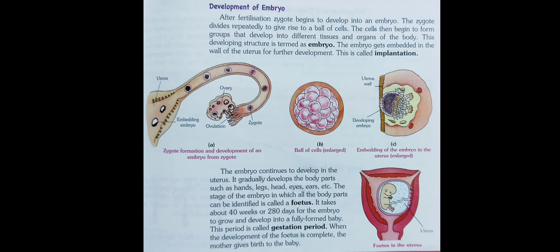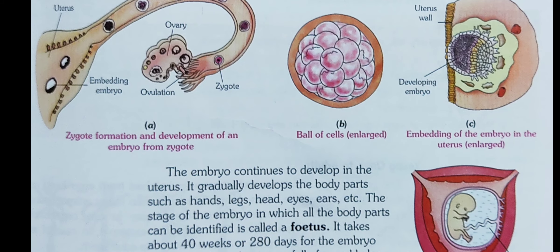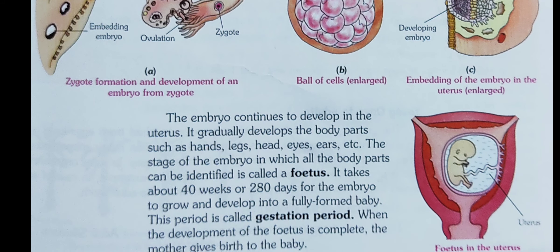The embryo continues to develop in the uterus. It gradually develops body parts such as hands, legs, hair, eyes, and ears. The stage of the embryo in which all the body parts can be identified is called a foetus. It takes about 40 weeks or 280 days for the embryo to grow and develop into a fully formed baby. This period is called the gestation period.